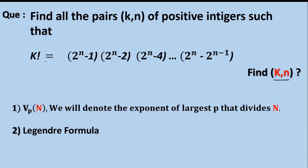The given equation is: k factorial equals 2 raised to the power of (n minus 1), multiplied by 2 raised to the power of (n minus 2), and so on, up to 2 raised to the power of (n minus 2 raised to the power of n minus 1).